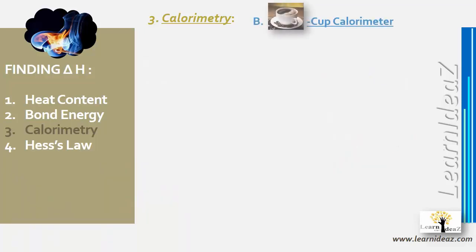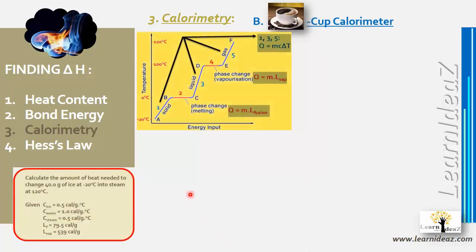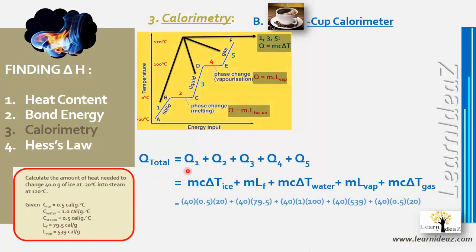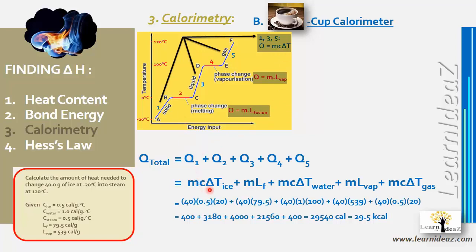Total heat = q₁ + q₂ + q₃ + q₄ + q₅. That is: q₁ = mc_ice × delta t₁, q₂ = m × L_f, q₃ = mc_water × delta t₃, q₄ = m × L_v, q₅ = mc_steam × delta t₅. Note that c_ice, c_water, and c_steam are all different values.